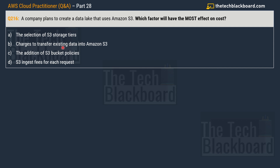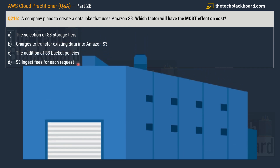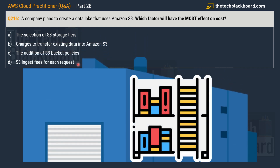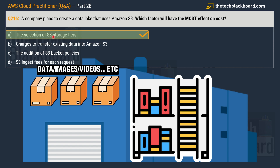Your options are: Option A — the selection of S3 storage tiers; Option B — charges to transfer existing data into Amazon S3; Option C — the addition of S3 bucket policies; and Option D — S3 ingest fees for each request. The correct answer is Option A: the selection of S3 storage tiers.